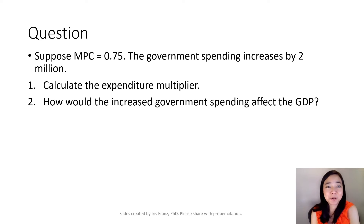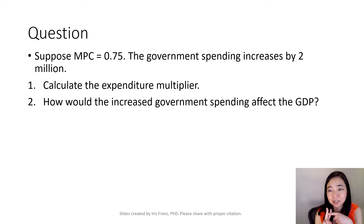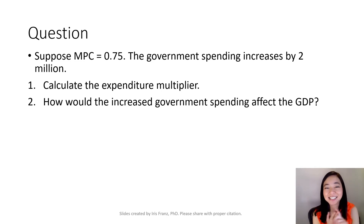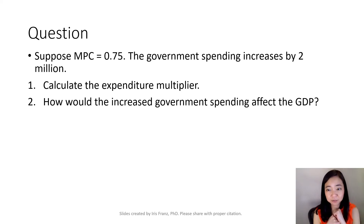Now practice makes perfect. Here is a practice question. Suppose MPC is equal to 0.75 and the government spending increases by $2 million. There are two questions: first, calculate the expenditure multiplier; second, how would the government spending increase affect our GDP? Meaning, would our GDP go up or down, and by how much? Please pause the video here and try to work on this question yourself, and then we can compare answers.